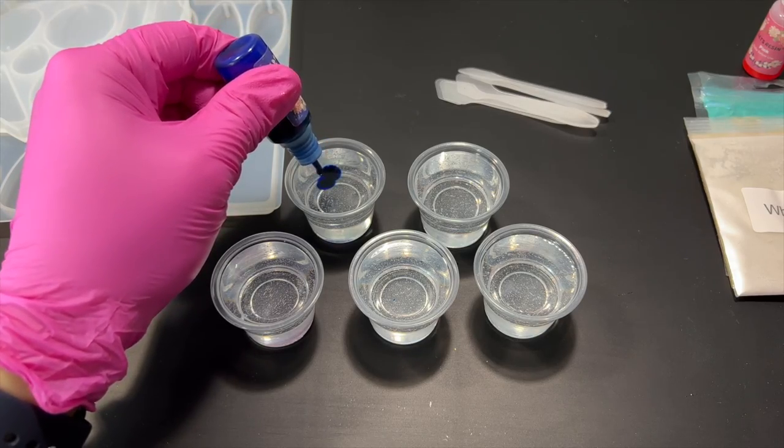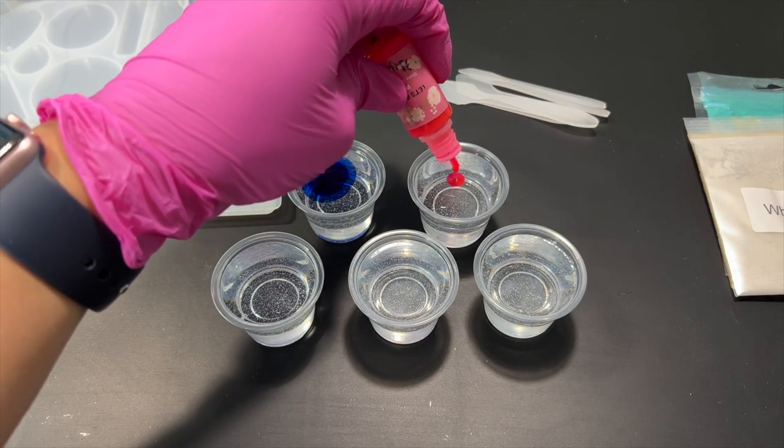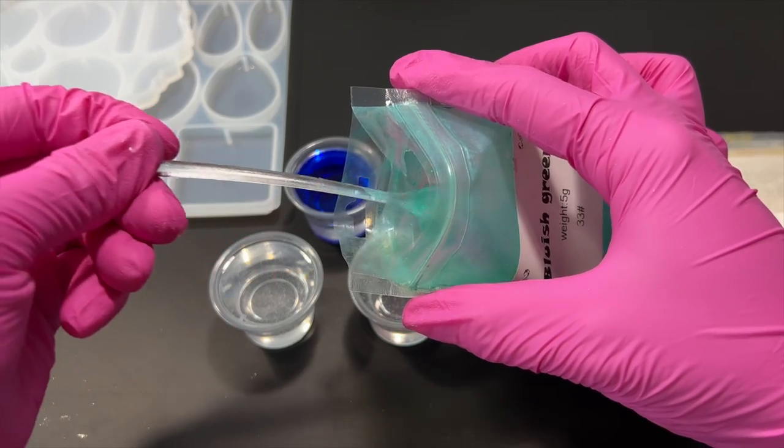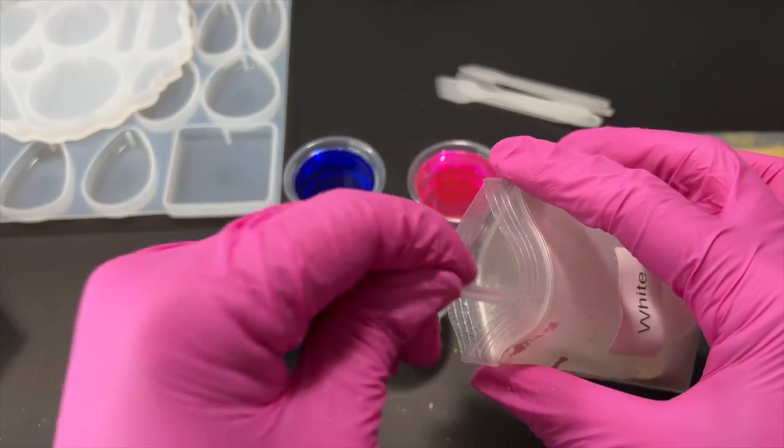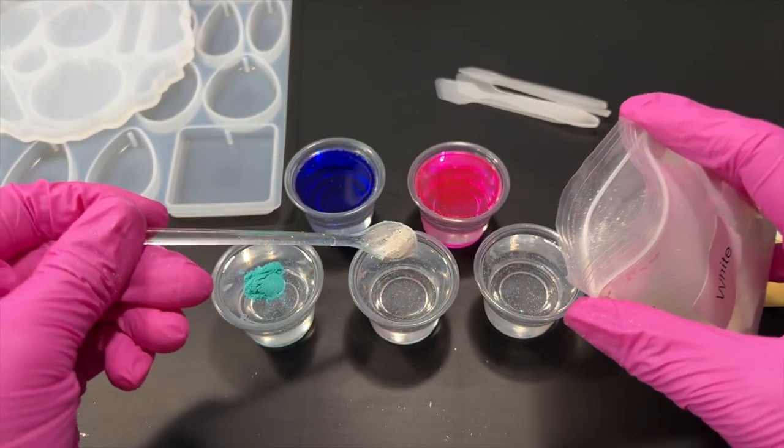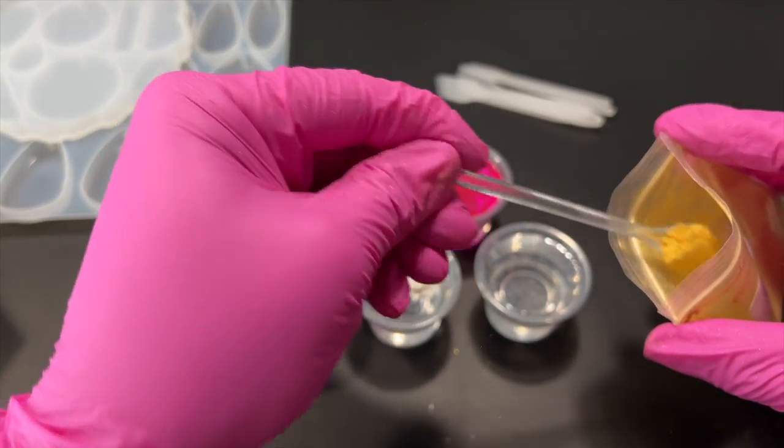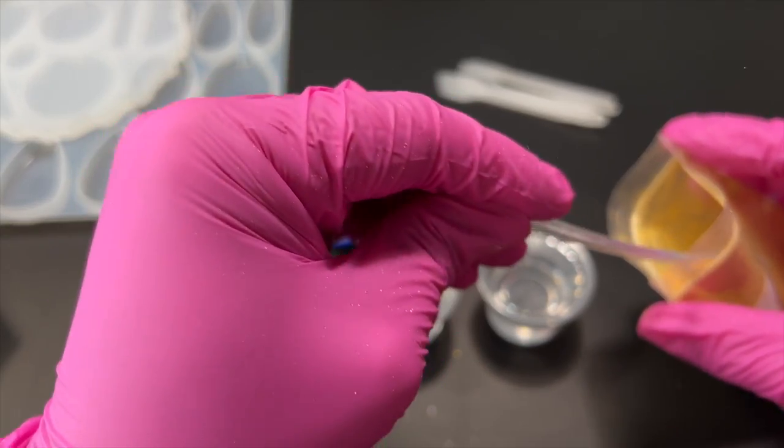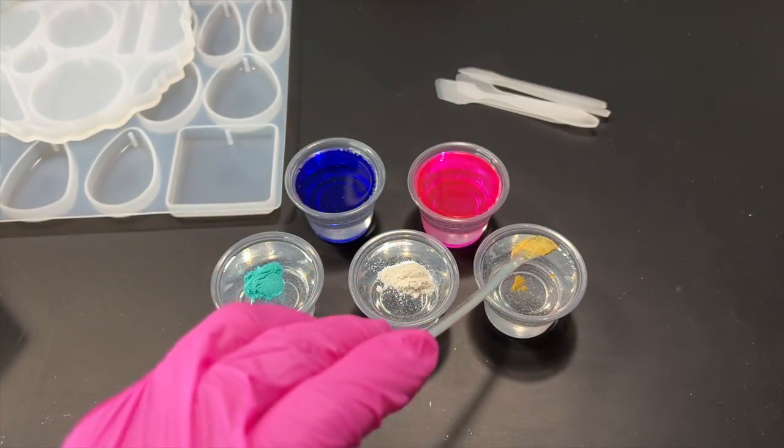For the resin liquid pigments, I put five drops of the sapphire blue and ten drops of the pink in the resin. As for the mica powders, I put way too much. You only need a tiny amount of mica to get a gorgeous tint, but sometimes it's hard to see how much I've scooped up with my phone in the way while I'm recording.